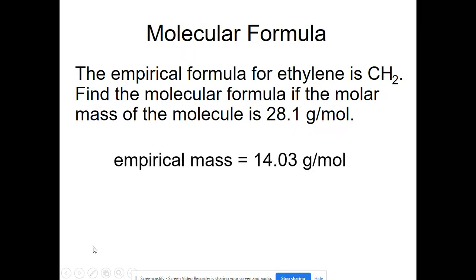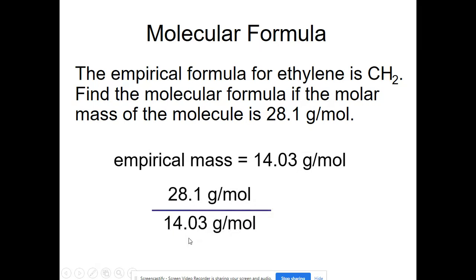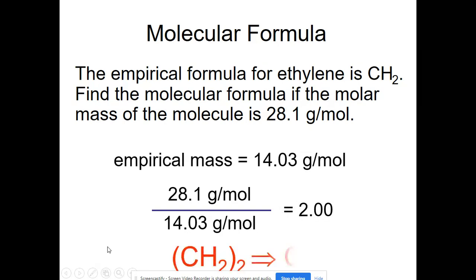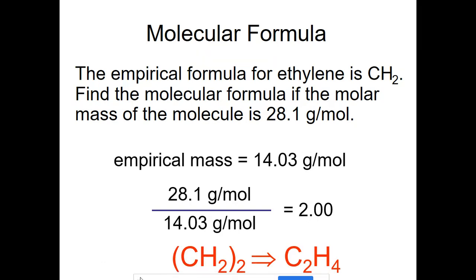So here is just a very simple example of this. Here they've already found the empirical formula. We're given the molecular mass, that's 28.1. We have to calculate the empirical formula mass. If we calculate that for CH2, it will be 14.03 grams per mole. And then we divide these two, the molecular molar masses on the top and the empirical molar masses on the bottom. We get an answer of 2. And then our molecular formula would be C2H4 because the empirical formula goes into the molecular formula two times.